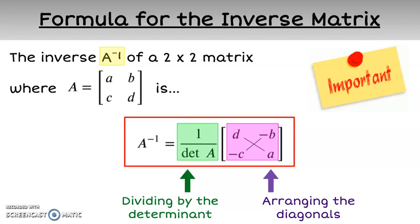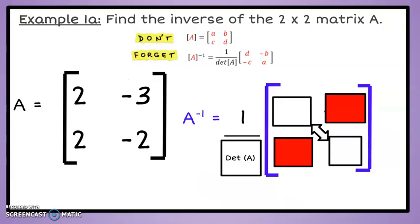We will now find an inverse matrix using the formula. We will use the formula to find the inverse matrix of A. First, pause the video and try it on your capture sheet. Recall the two main parts of the formula. We need to use the determinant and arrange the elements in the matrix. Let's start with the determinant.